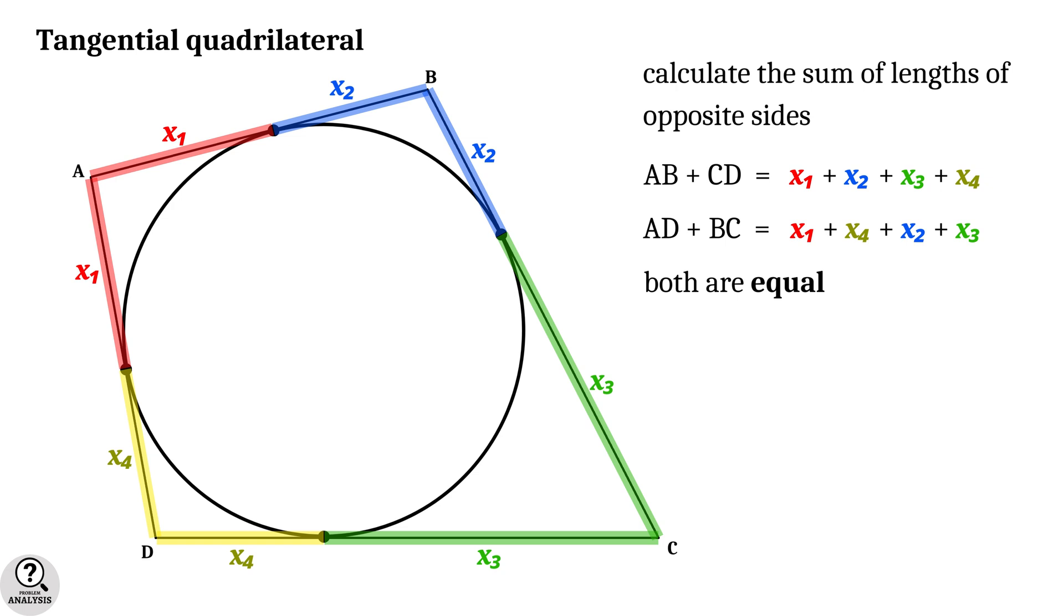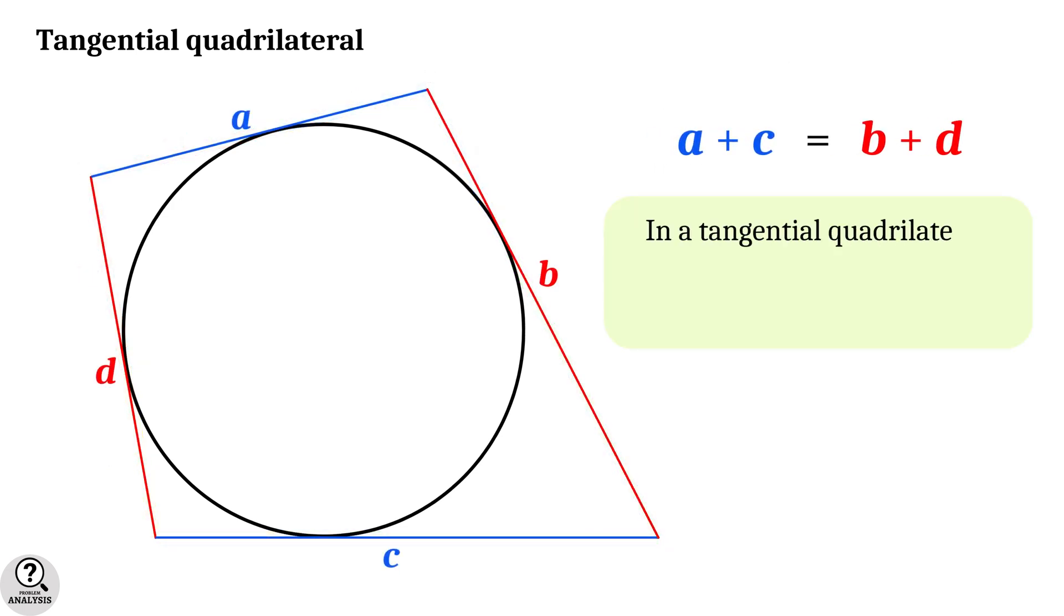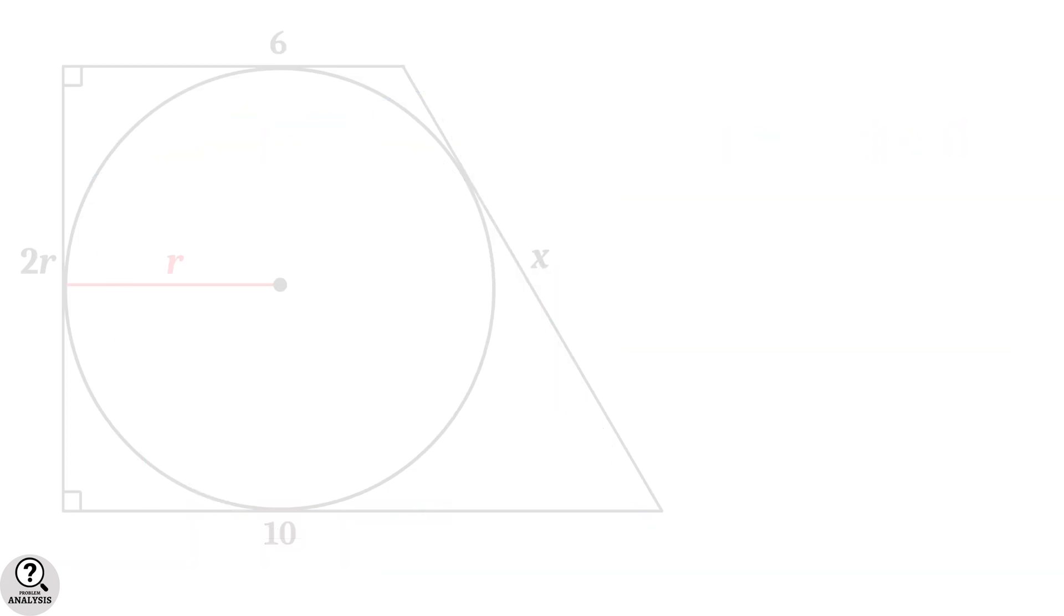That is, as we told, in a tangential quadrilateral, the sum of each pairs of opposite sides are equal. Keeping this in mind, come back to the problem.